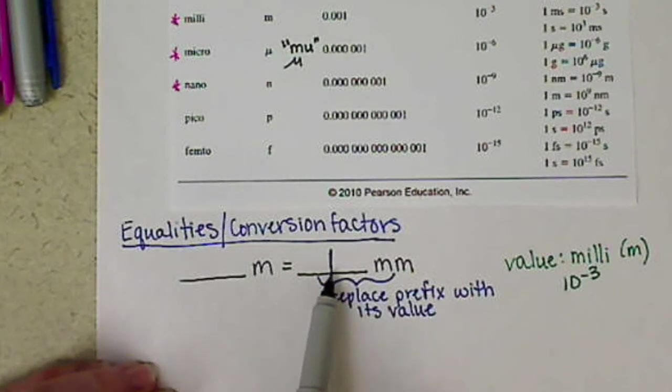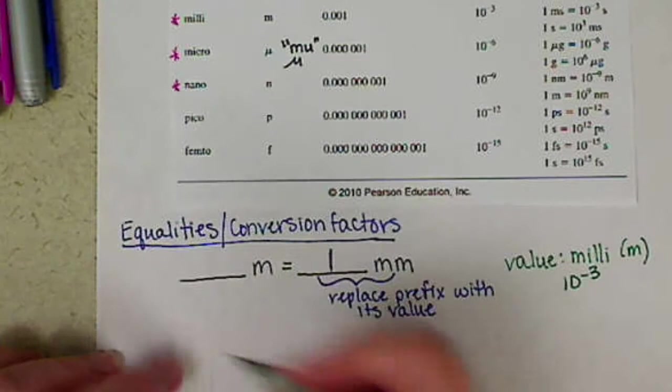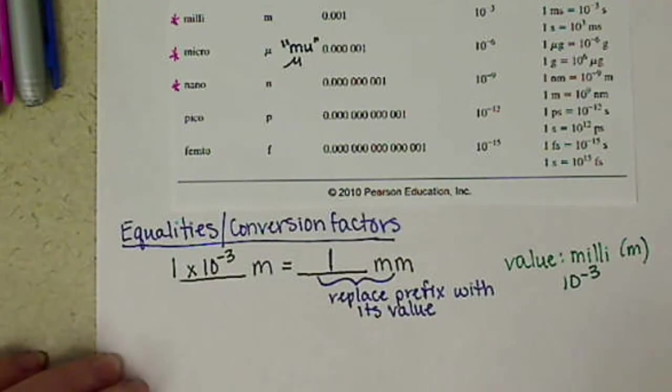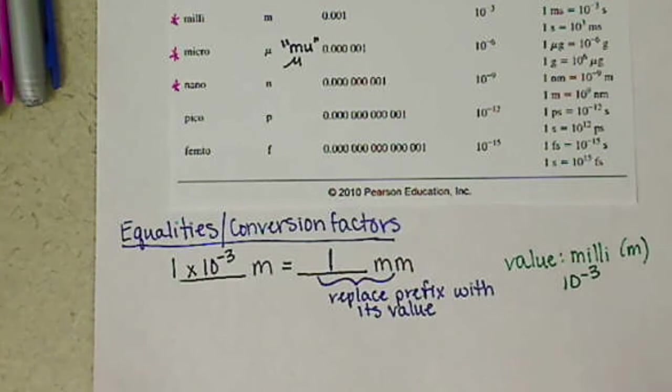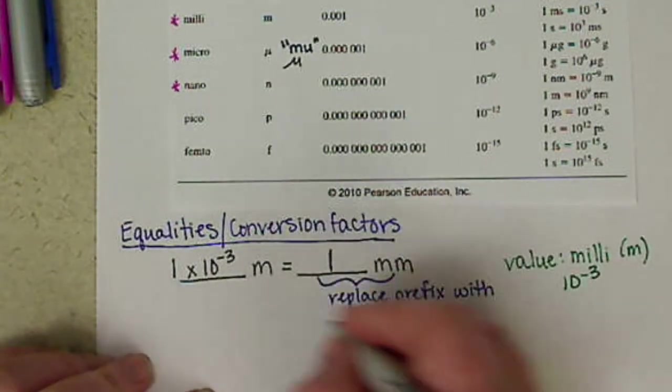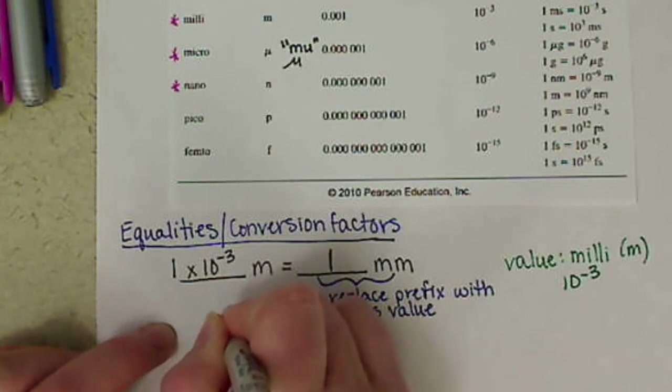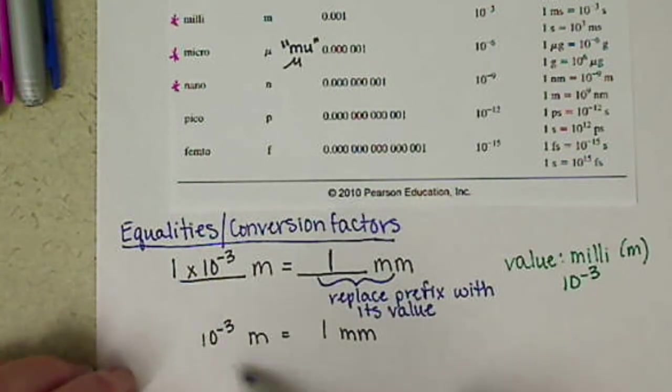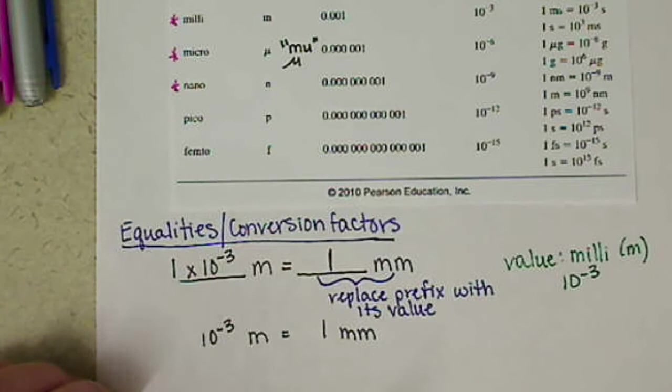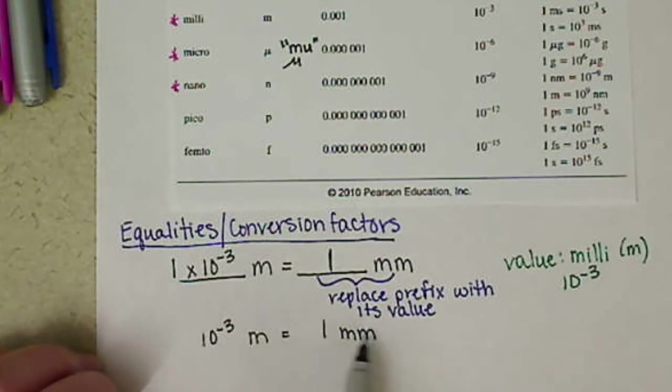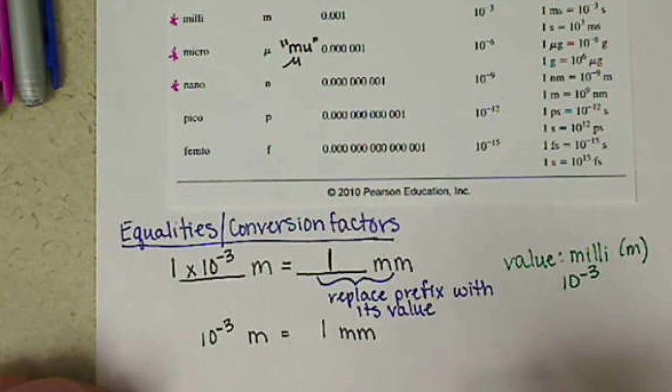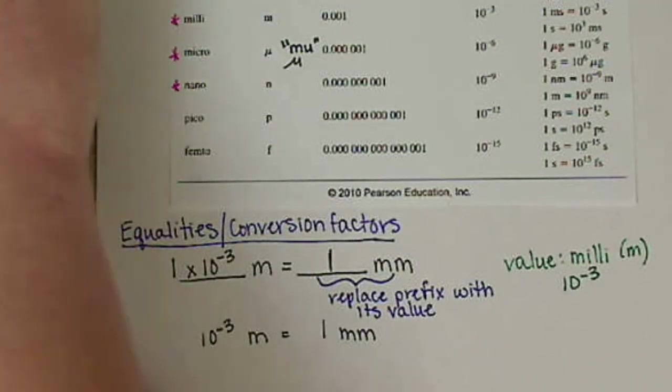So one millimeter, we're going to replace that milli with its value. So we'd have 1, keeping that 1 there, times 10 to the negative 3. Now, 1 times anything is just itself. So most of the time, what we'll write this as is we'll say 10 to the negative 3 meters is equal to 1 millimeter. This is our equality. Anytime that we have something equal to something, that's what we call an equality. Now, a conversion factor is using an equality and setting it up so that we can use it to convert our units. So from each equality, there are two different conversion factors.